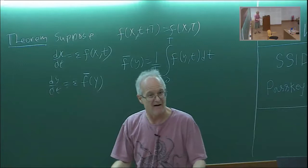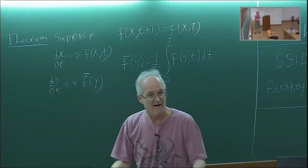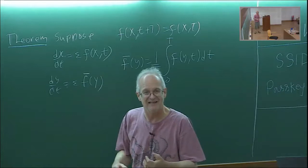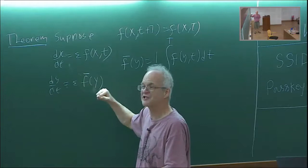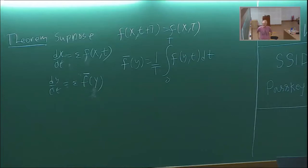In other words, the dynamics of the periodic system are similar to the dynamics of the average system. In particular, if the average system has a stable equilibrium point, then the original system has a stable periodic orbit. So let's go back with that theorem in hand — this is periodic, epsilon is small, so let's average it.